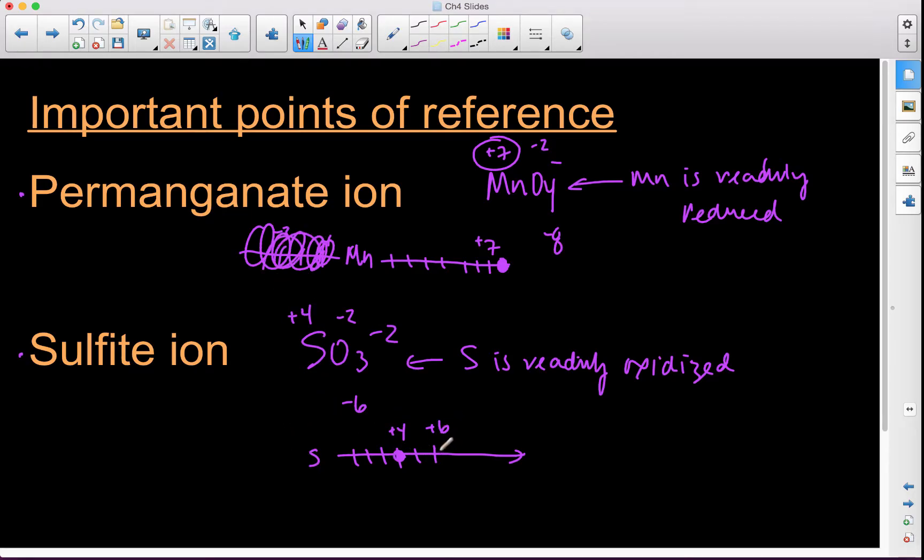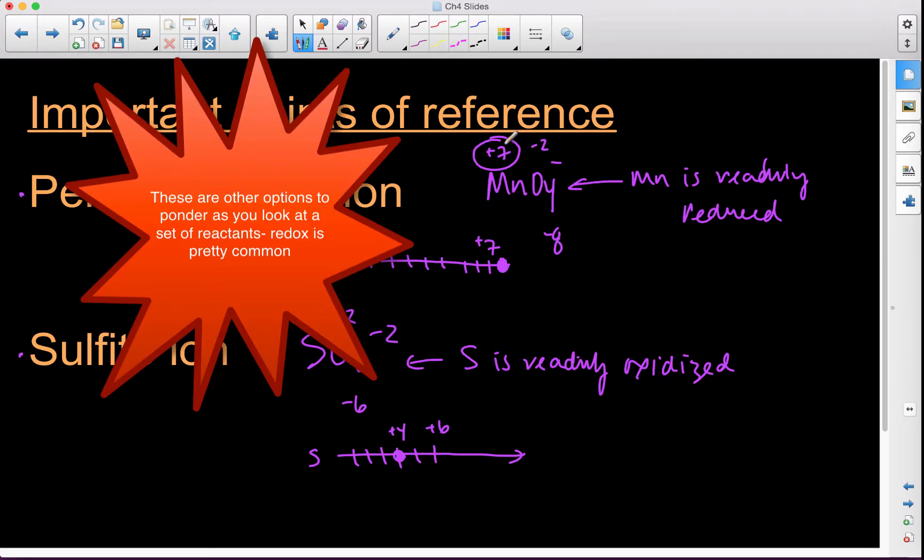Because an elemental metal has an oxidation state of zero. And if we were to reduce something that's zero, meaning its new oxidation state would be negative, and that's not an option for metals. So none of that would be applicable here.